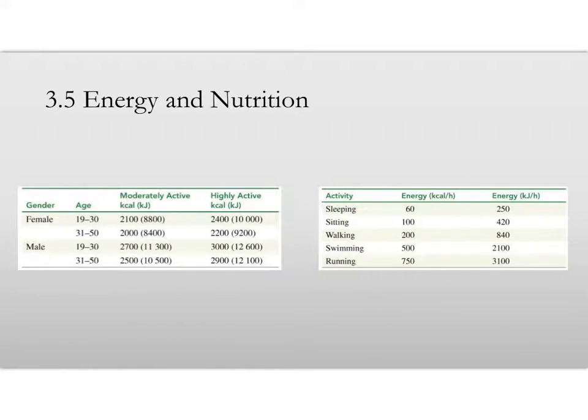This here shows average or necessary caloric intake based upon gender and age. So there's females between 19 and 30 years of age, then 31 and 50 years of age, and then same thing for males. And then you can see it's also based upon moderately active versus highly active. Let's pretend we're all highly active individuals. I'm 33 years old, so if I'm a highly active male, I need 2900 kilocalories every single day.